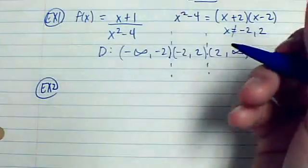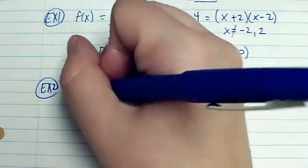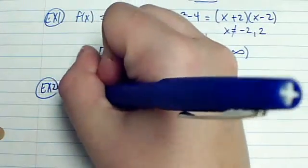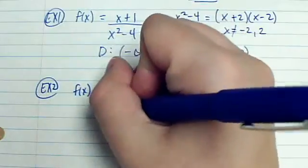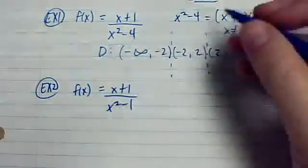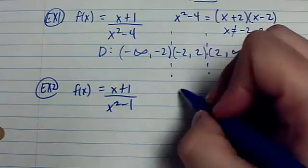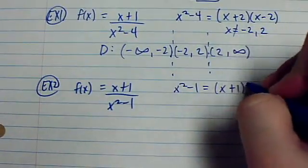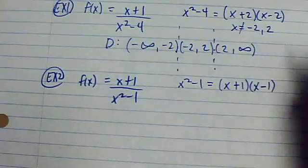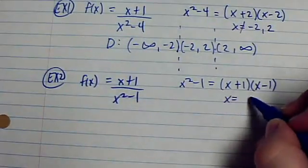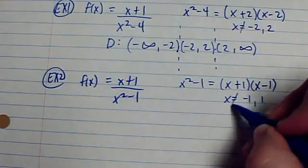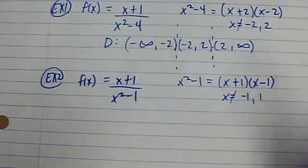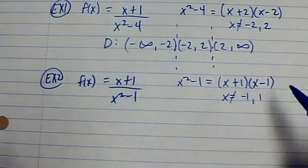So if we look at another example that's similar. If I have (x+1) over (x²-1), I'd look at the denominator again. So I get x²-1. That can be factored as (x+1) and (x-1). So again, my x values are negative 1 and 1, and x cannot be that. So this is where you're going to have your asymptotes at.